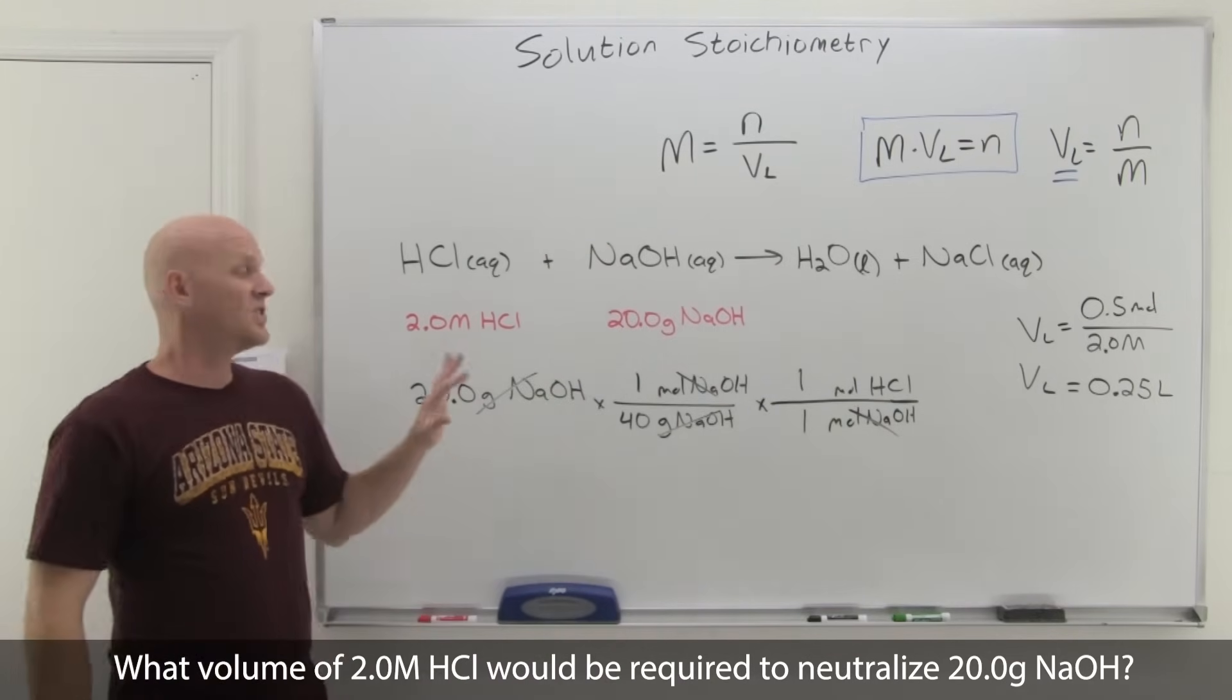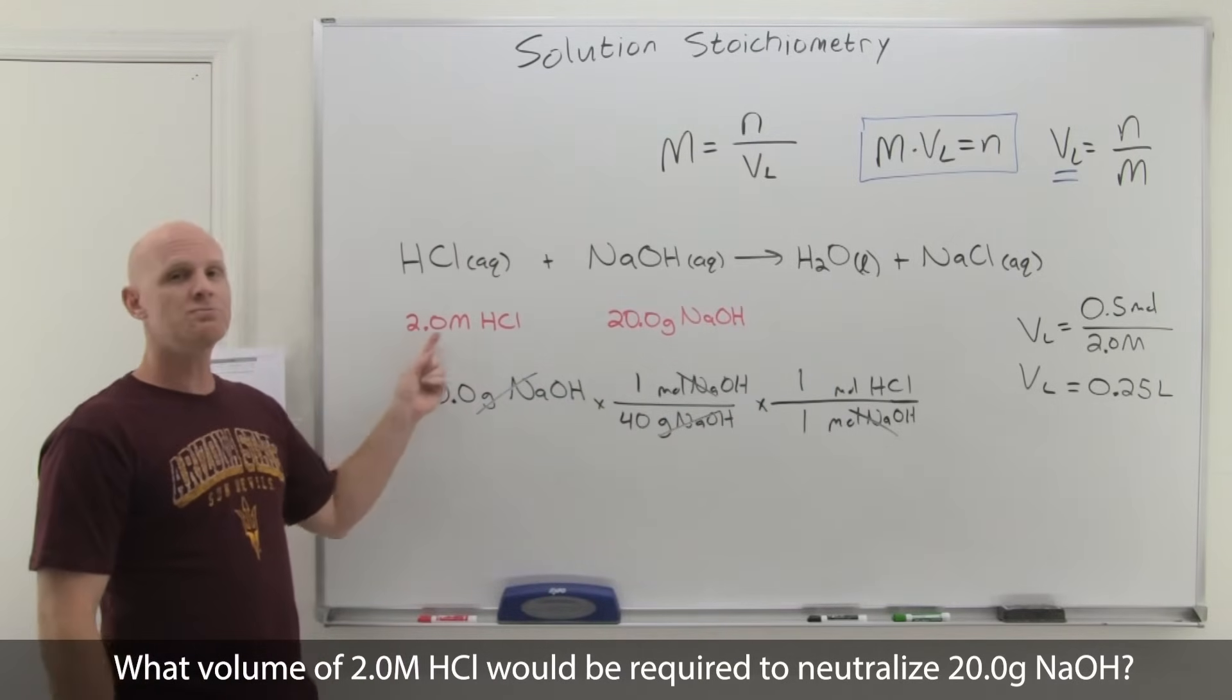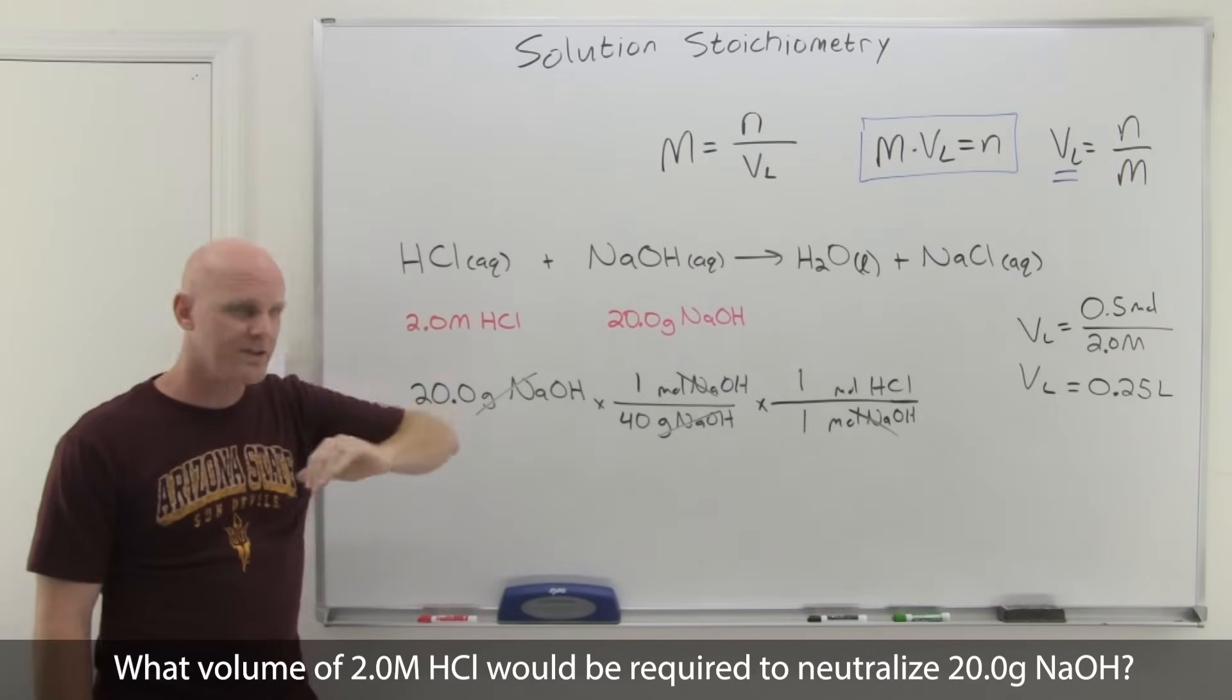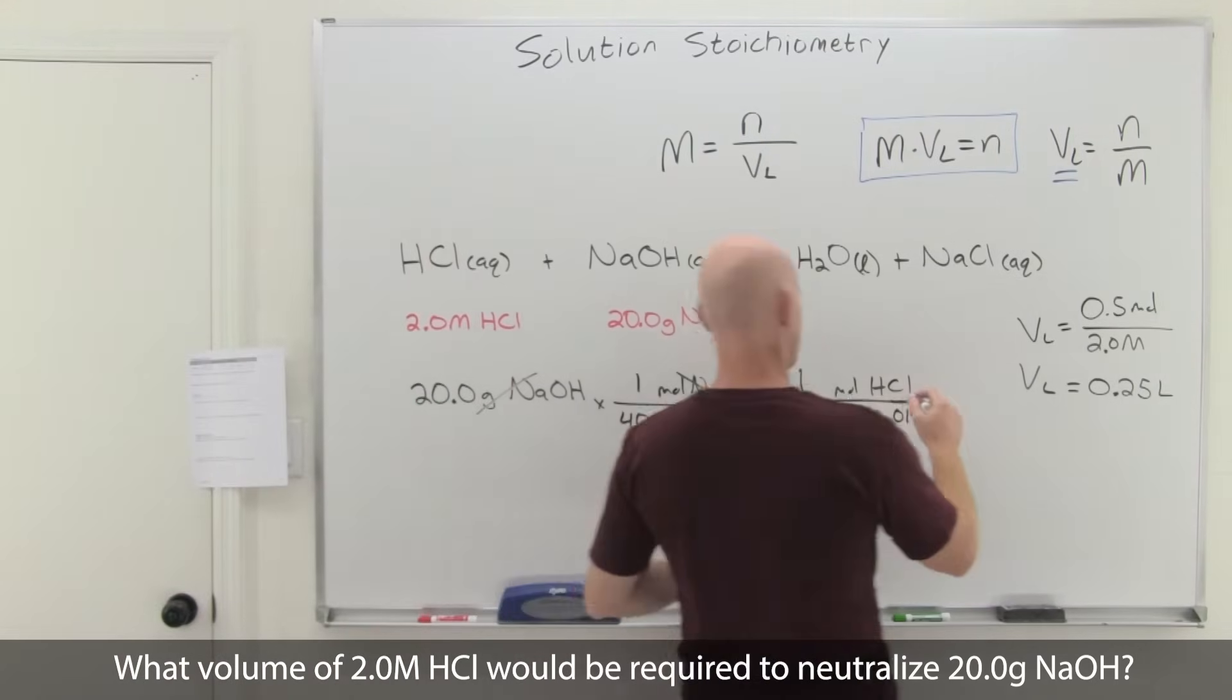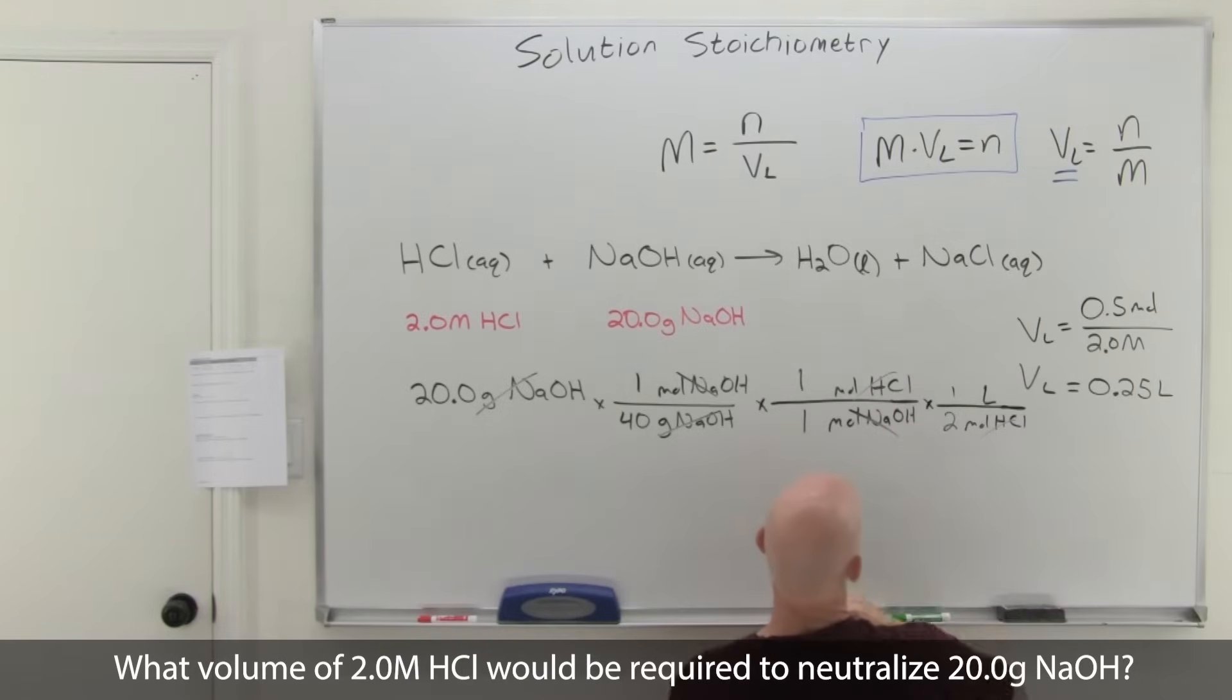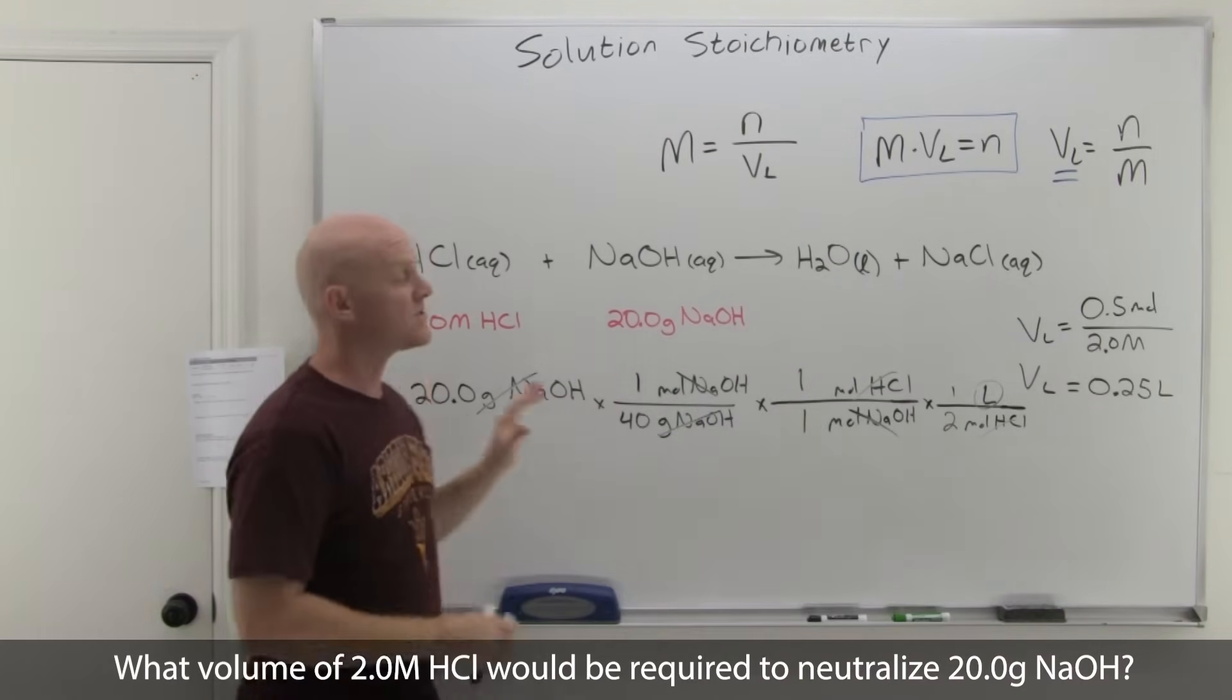The other thing you could do is make this all one big dimensional analysis problem by remembering that 2 molar is the same thing as 2 moles per liter. If we took that from here, we could take moles of HCl per liter, and it's 2 moles per liter. Now we'd solve for this in liters here as well, and it'd be 20 over 40 is 0.5 divided by another 2 would get us 0.25 as well.